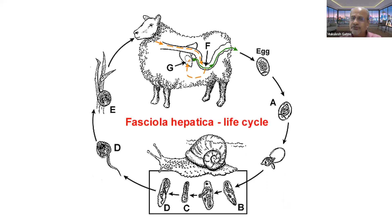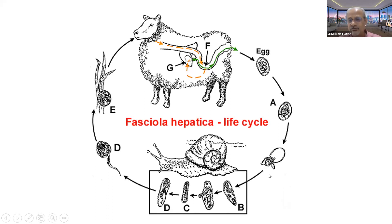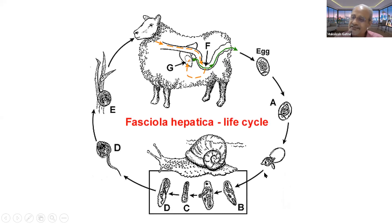Regarding Fasciola, as you all know, they are present in the liver or in the bile duct. The eggs are voided in the feces, which are microscopic — you cannot see them. Under suitable climatic conditions, these eggs hatch and the larval stages come out and then they enter into the body of the snail.